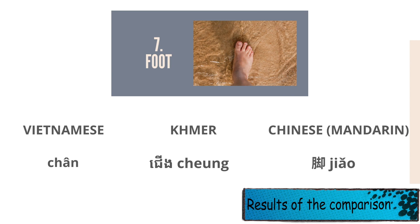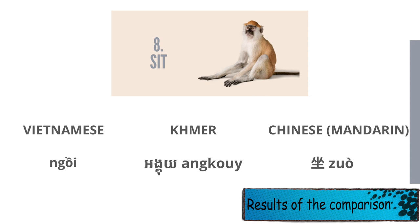Seven: foot. In Vietnamese, 'chân'; in Khmer, it is almost identical. In Chinese, 'jiǎo.' Eight: sit. In Vietnamese, 'ngồi'; in Khmer, if the first syllable becomes just 'ng' and we read it very fast with the second syllable as one word, then it sounds almost identical to the Vietnamese 'ngồi.'